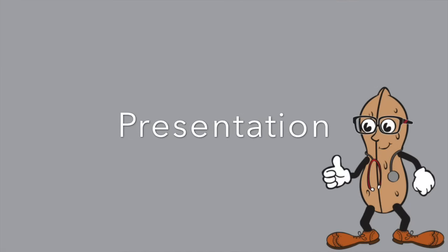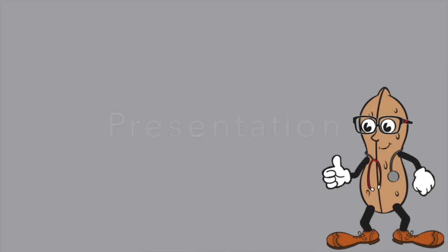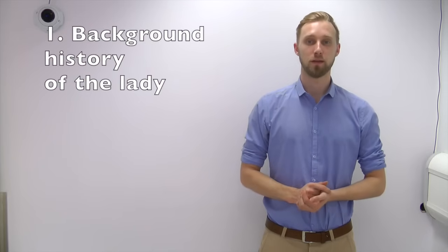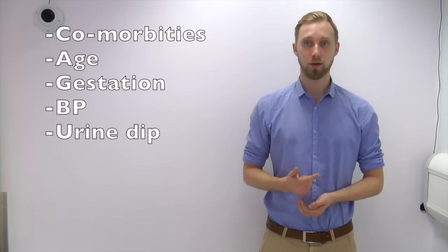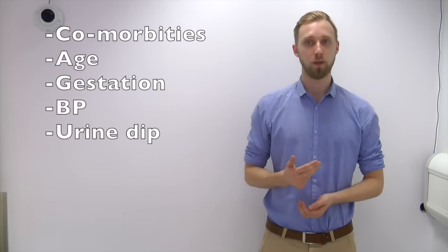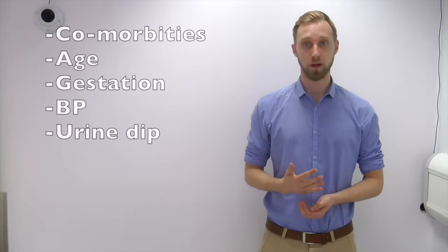Now, a guide to presenting the case. To present a history there are four key areas. Number one: give a brief history of the lady. State her comorbidities, her age, the gestational age, her BP and her urine dipstick results.